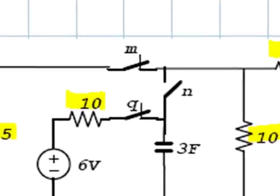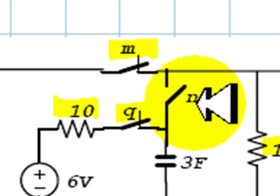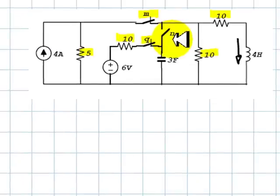The switches M and Q, this one and this one, have been closed and N has been opened for a very long time. That means the circuit is in steady state.